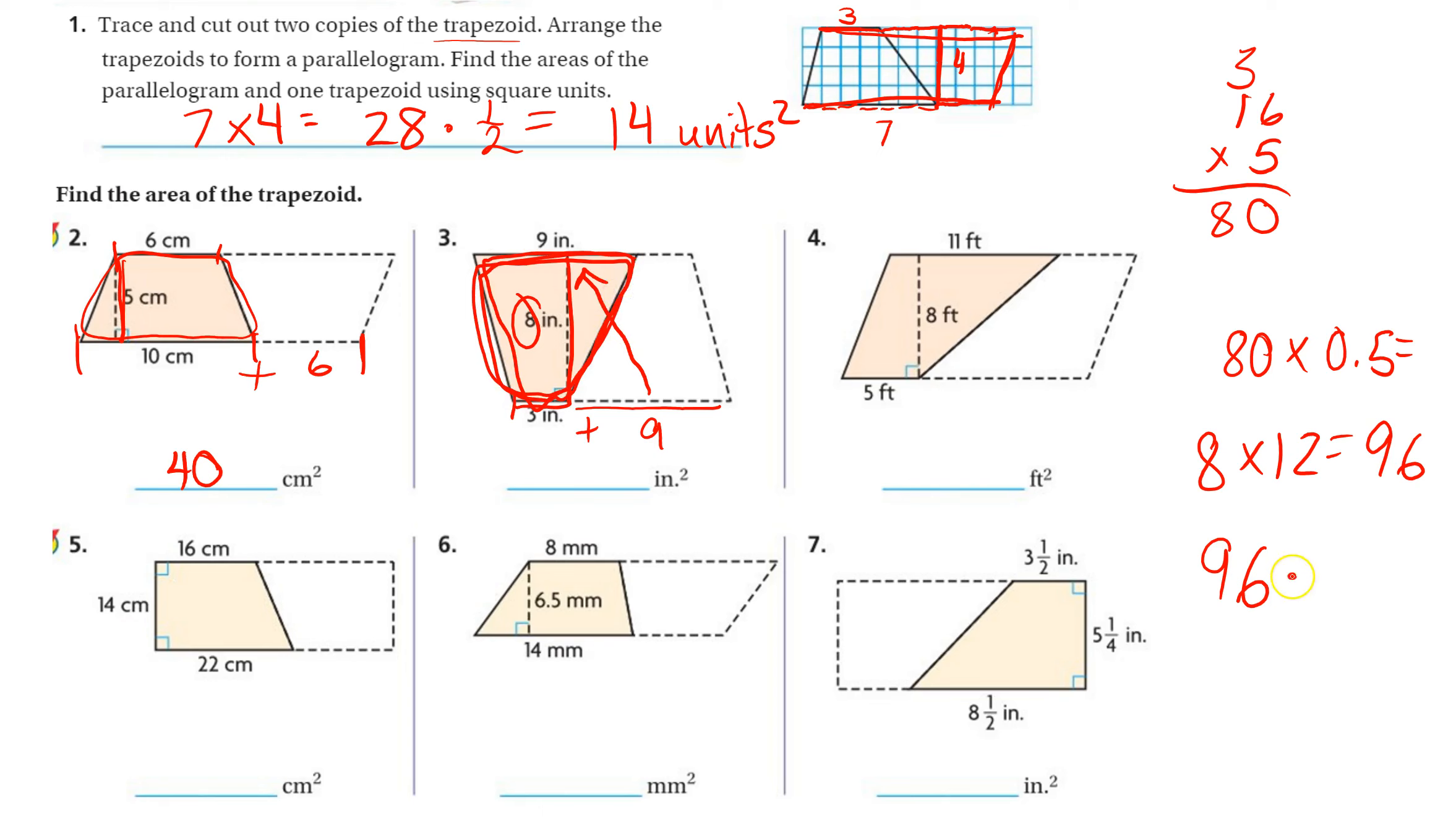We just want to know the trapezoid, so then we multiply this by one-half, or multiply it by 0.5, or divide by 2. They all do the same thing. Half of 90 is 45, half of 6 is 3, 45 plus 3 is 48 inches squared.